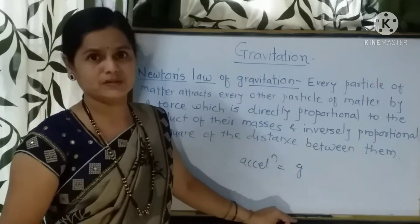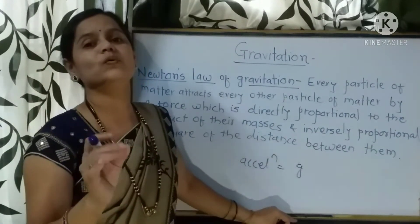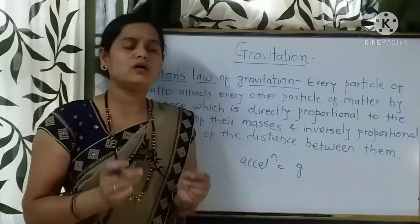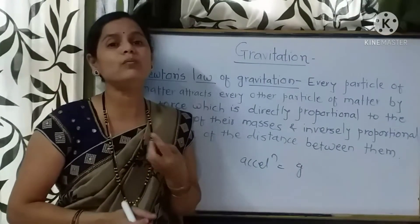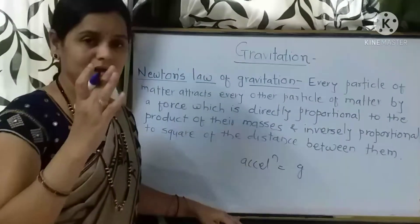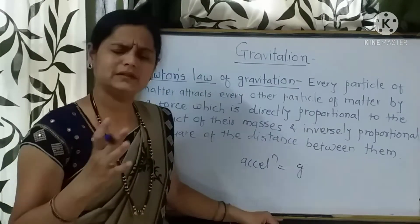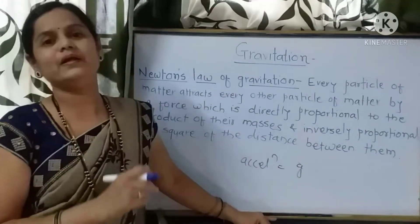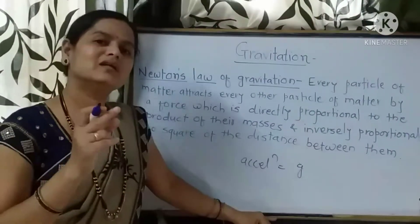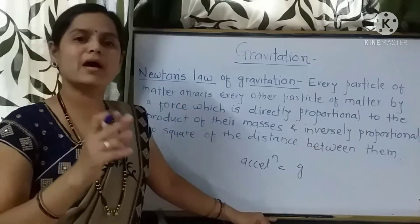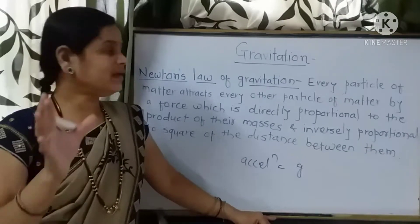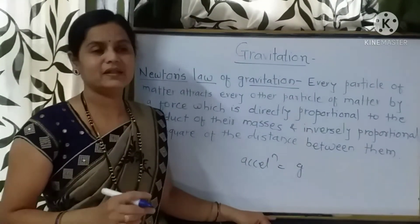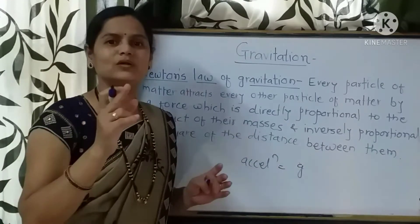Gravitational force exists between any two objects — it is a mutual force. From macroscopic to microscopic objects, from atomic and nuclear objects up to celestial bodies such as planets, asteroids, and comets, what exists between any of these objects is nothing but the gravitational force. This force causes massive objects to attract each other, enabling their motion in particular orbits, and we observe planetary motions where different planets revolve around the sun.